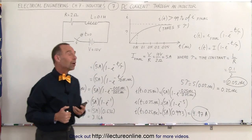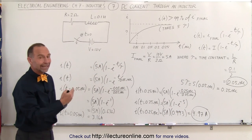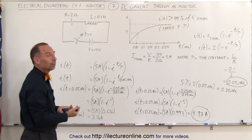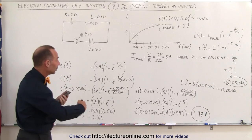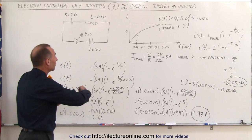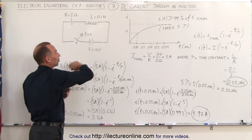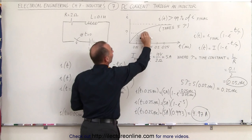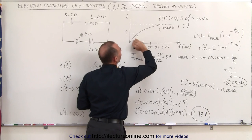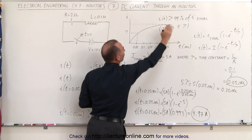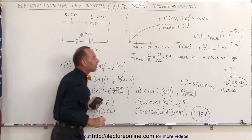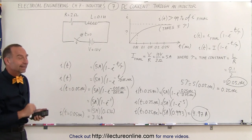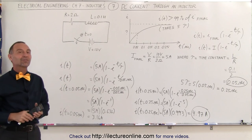So that's how we calculate the current in an RL circuit when we have a DC voltage applied. Remember, initially when the current comes up, the inductor fights the change in current — it holds back the current flow — but eventually the current does reach its final value after about 5 time constants, which in this case is about a quarter of a second. And that's how it's done.